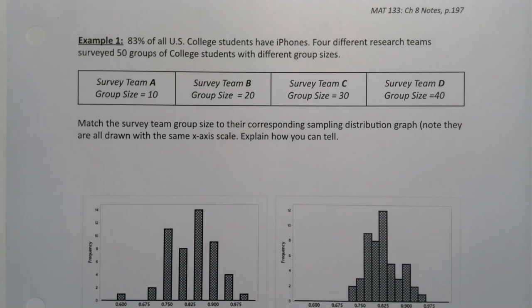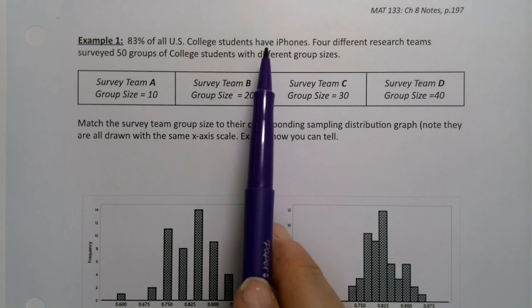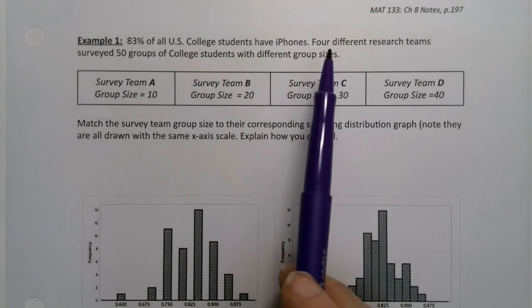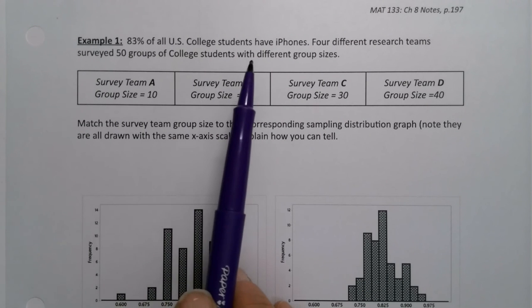Now suppose, just randomly, that 83% of all college students have iPhones. It's not actually 83%, but bear with me here. So we have four different research teams surveyed 50 groups of college students with different group sizes.